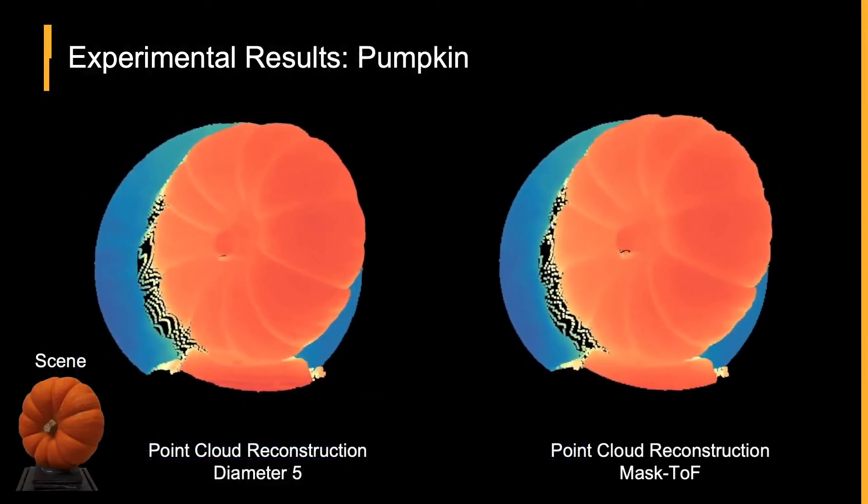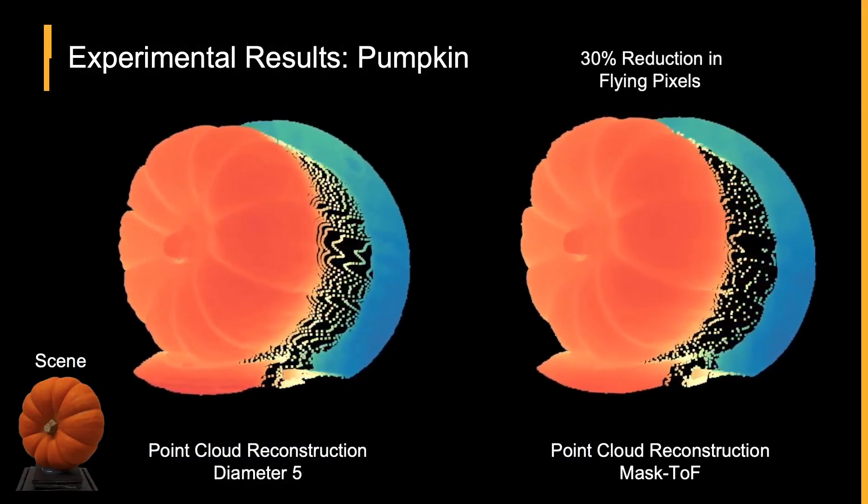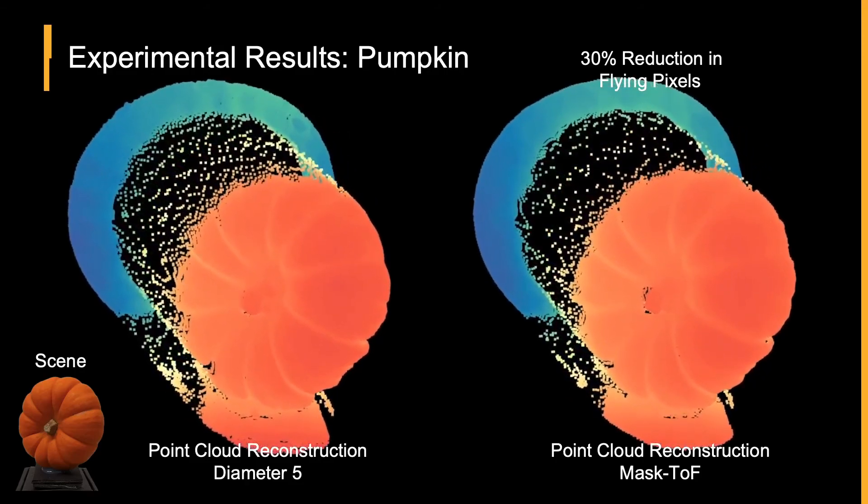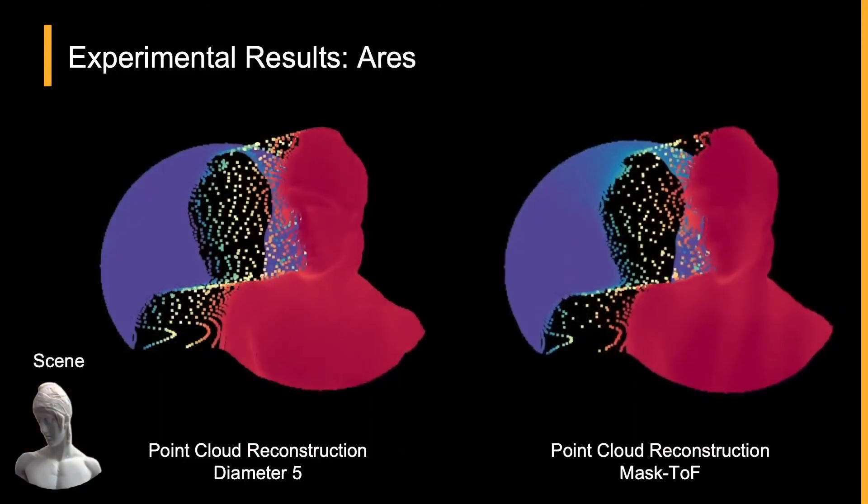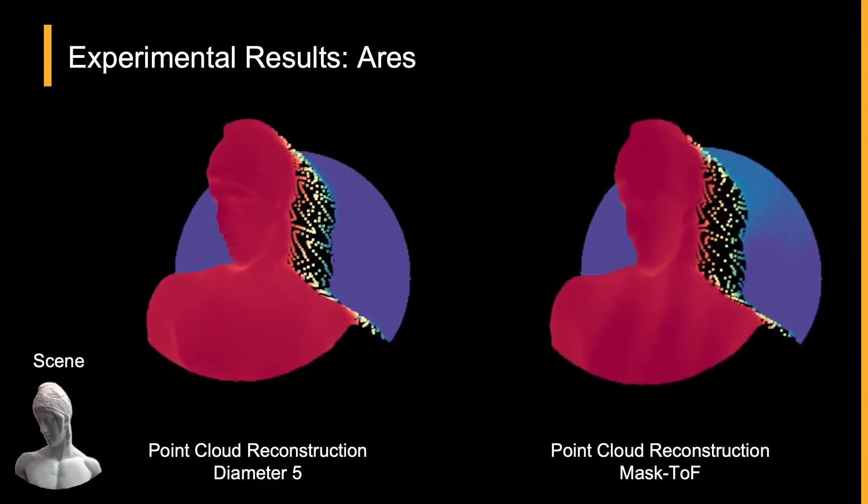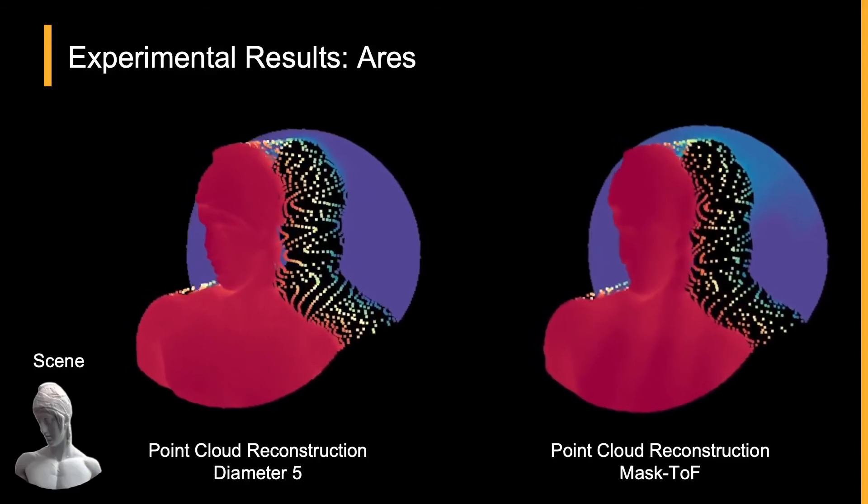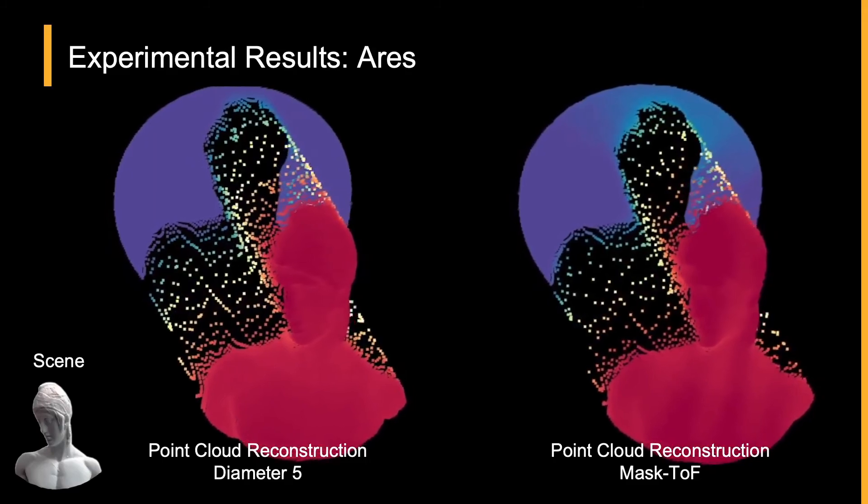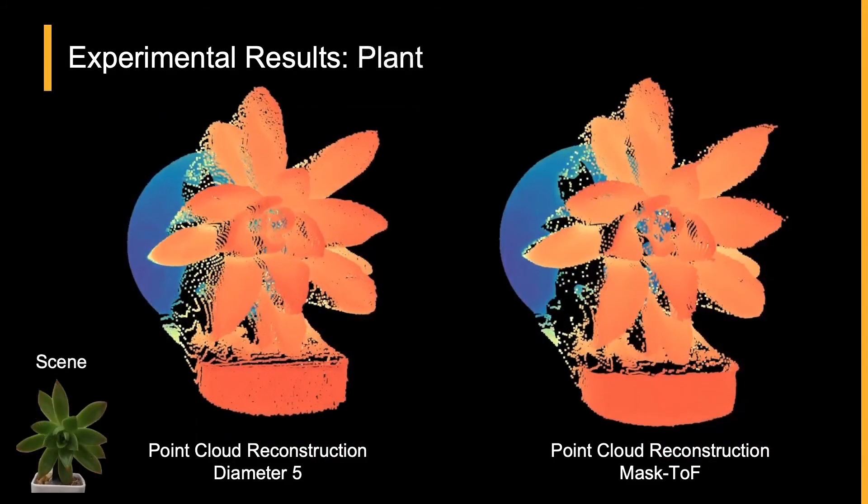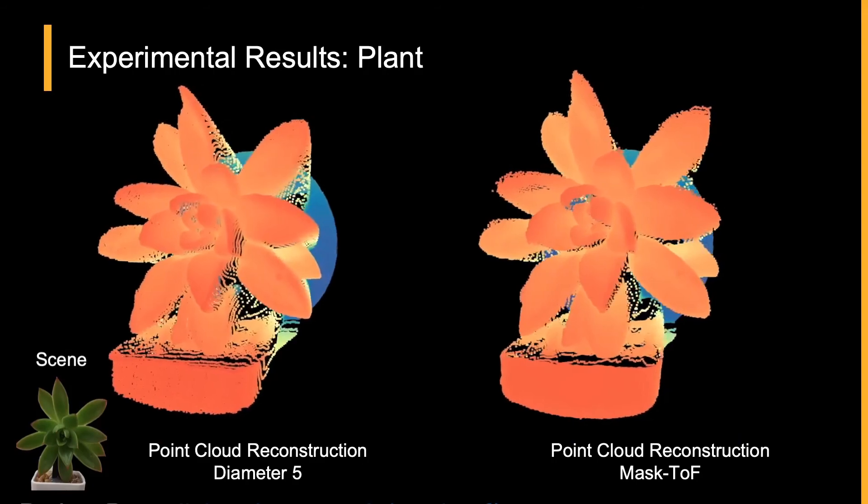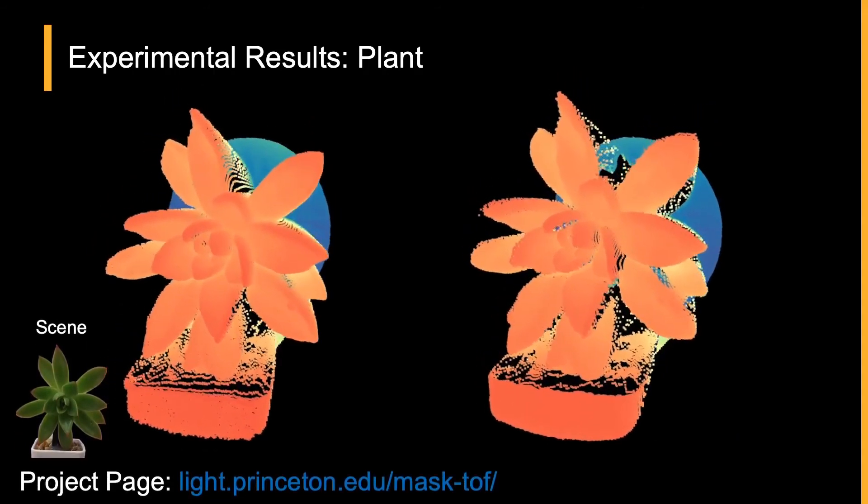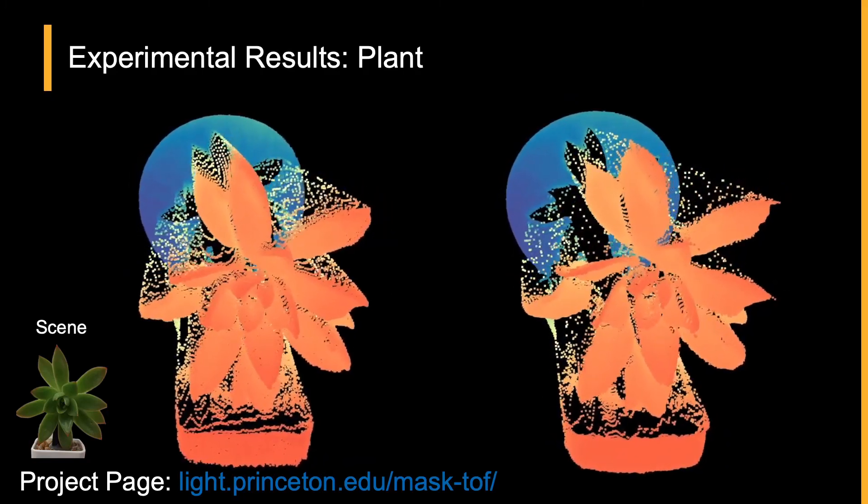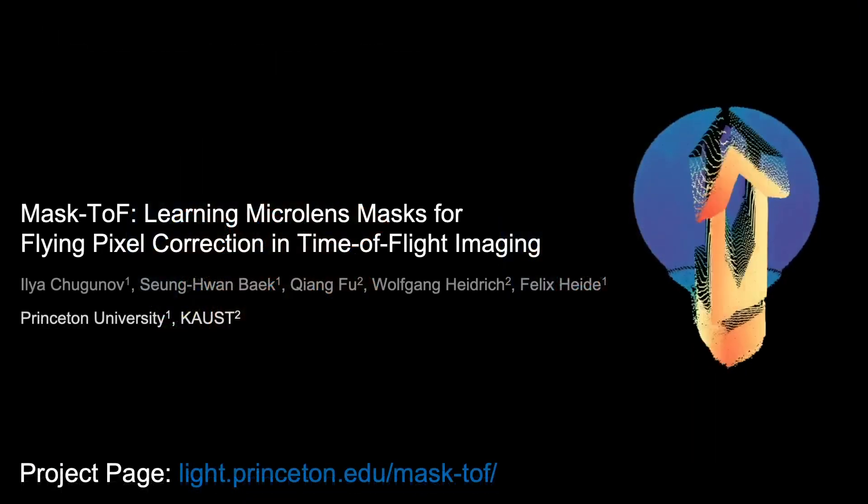For real scene captures, Mask-ToF achieves a 30% reduction in flying pixels as compared to an identical light throughput global aperture mask. We find the results generalized to scenes of varying geometry and surface material, all without retraining or fine-tuning the learned refinement network. We encourage the viewer to visit our project page for code and more project details. Thank you for watching.